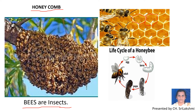This is the life cycle of the honeybee. The adult, or the queen bee, lays eggs. These eggs grow and this stage is called the larva. Then it becomes a pupa, and then again into an adult.